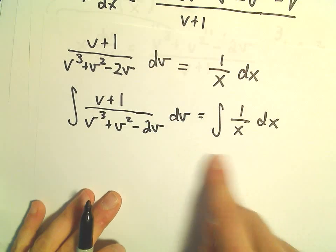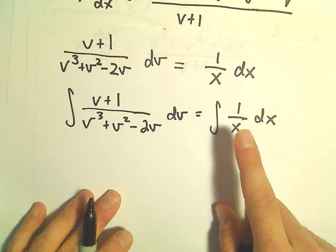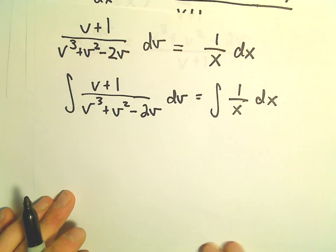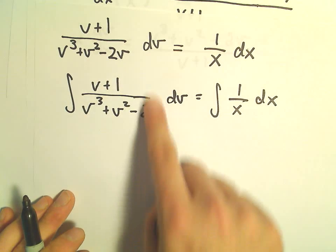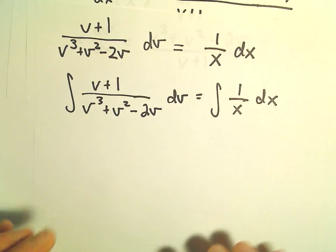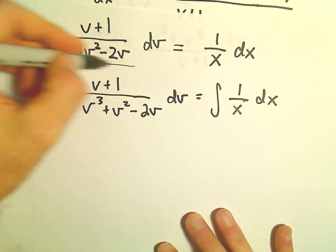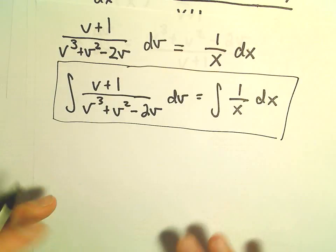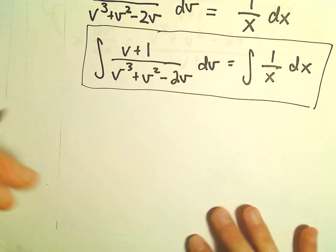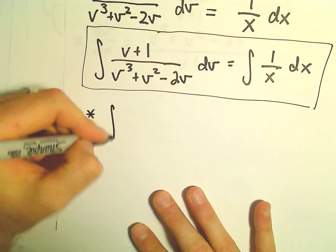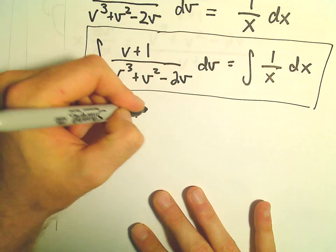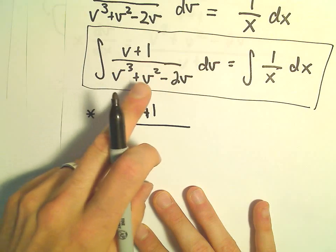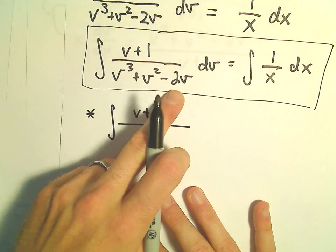The right side is pretty easy to integrate — that's just the natural logarithm of |x|. The fun part is solving the left side. So off to the side, I'm going to integrate (v + 1)/(v³ + v² - 2v).